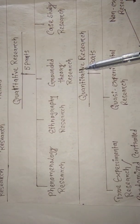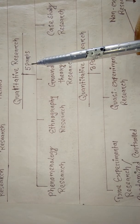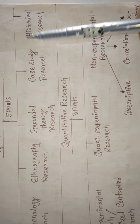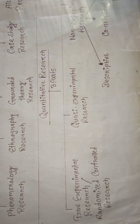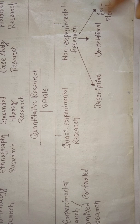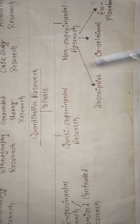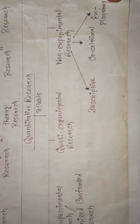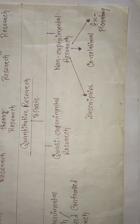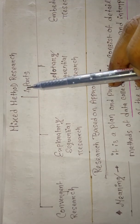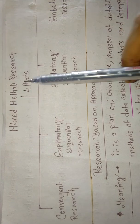We have already studied qualitative and quantitative. Qualitative is divided into five parts: phenomenological, ethnographic, grounded, case study, and historical. Quantitative research is divided into three parts: true experimental or randomized controlled research, quasi-experimental, and non-experimental research, which is further divided into three parts: descriptive, correlational, and exploratory.